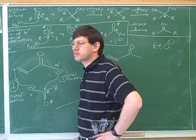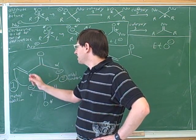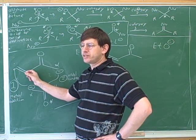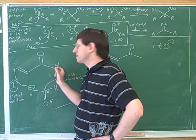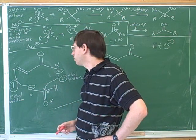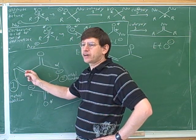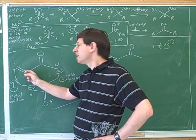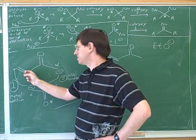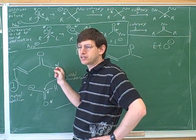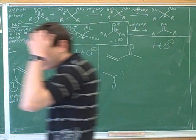Something else to point out: the alpha carbon that's going to be attacking here is not the one that was unsaturated to start with. The one that's in a good position to attack is the one over here that was never unsaturated. In the course of the Michael addition, we're going to form an enolate where this alpha carbon has a negative charge, but that's not in a great position to form an aldol condensation ring. It's this alpha carbon that was never unsaturated that's going to do the Robinson annulation.